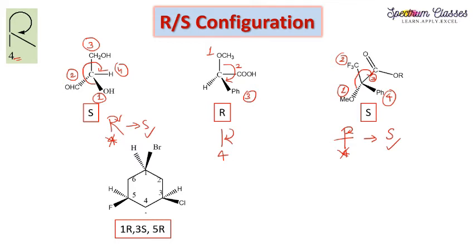Next we have a compound with more than one chiral center. For molecules with multiple chiral centers, we first identify all chiral centers — here chiral centers 1, 2, and 3. The numbering follows priority: bromine has higher priority over chlorine and fluorine, so bromine-bearing carbon gets number 1.